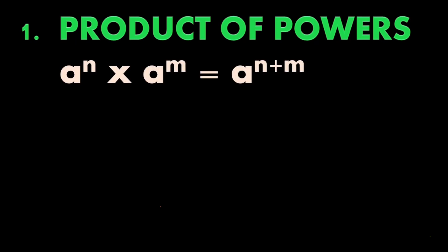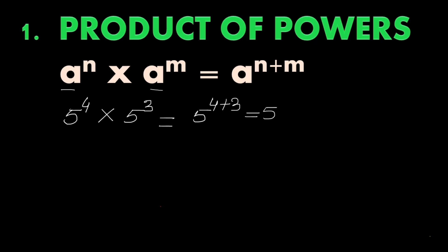Product of Powers means when a raised to the power n is multiplied by a raised to the power m, where both the bases are the same but exponents are different. When finding the product, we find the sum of the exponents with the same base. For example, 5 raised to the power 4 multiplied by 5 cubed equals 5 raised to the power 4 plus 3, which equals 5 raised to the power 7.